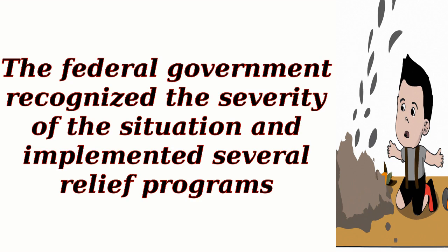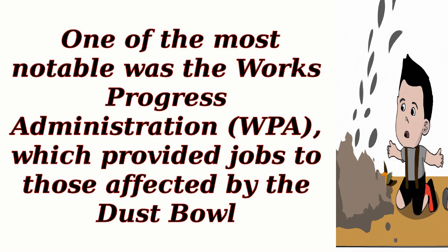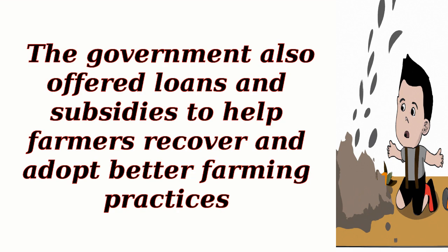The federal government recognized the severity of the situation and implemented several relief programs. One of the most notable was the Works Progress Administration (WPA), which provided jobs to those affected by the Dust Bowl. The government also offered loans and subsidies to help farmers recover and adopt better farming practices.